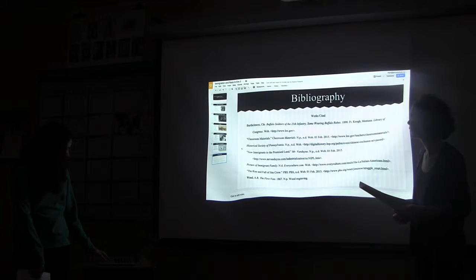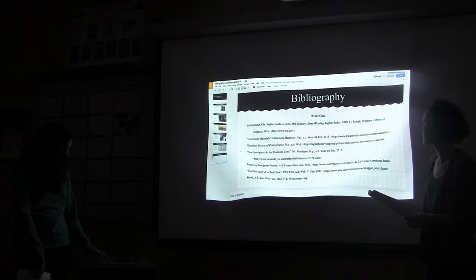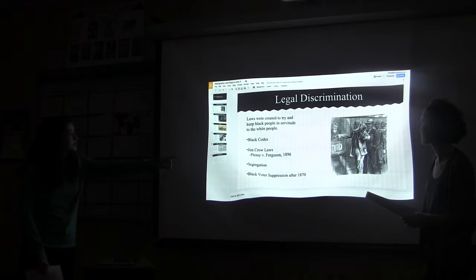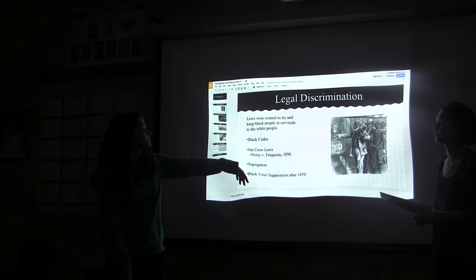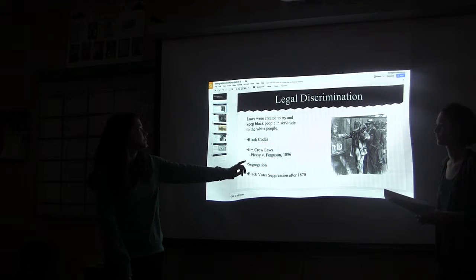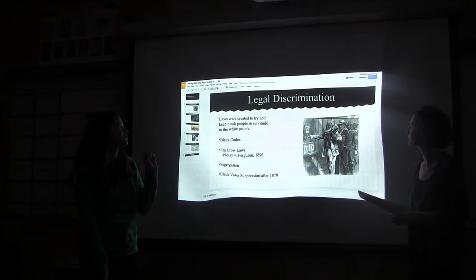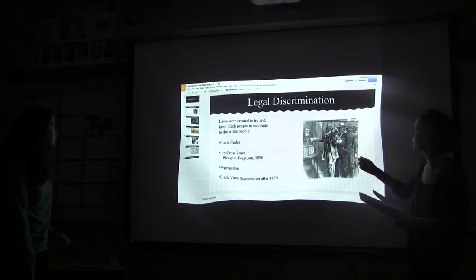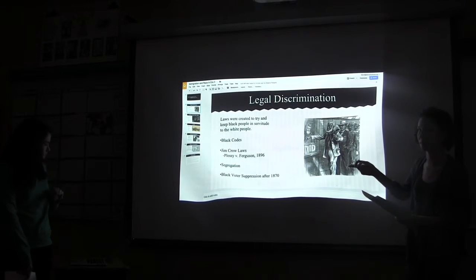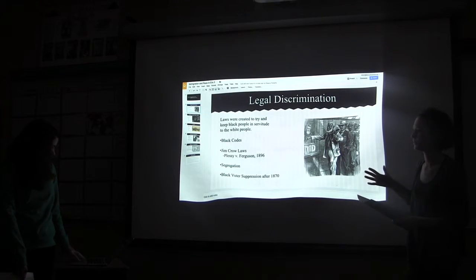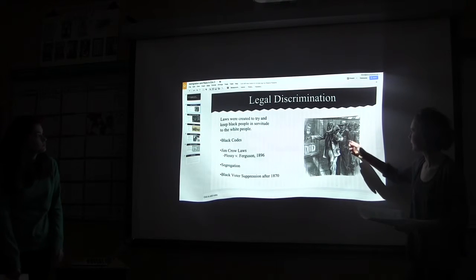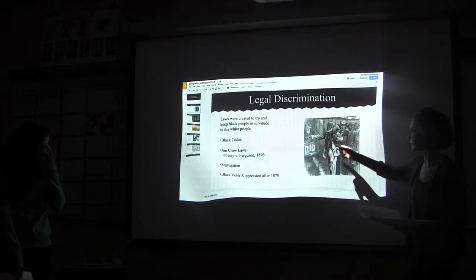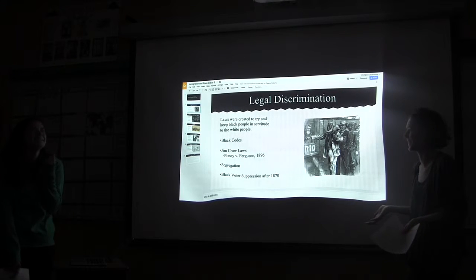This wood engraving was part of a magazine and is supposed to be depicting the first black voters. It was notable because it didn't show black people as stupid or animalistic — they had respectable jobs depicted, like a soldier, a farmer, and an ordinary black person. It was a little bit more respectful in how it portrayed African Americans.